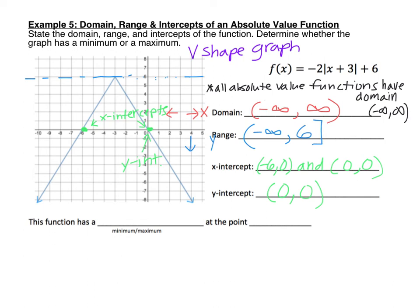As far as whether the function has a maximum or minimum — a maximum is if it has a high point and a minimum is if it has a low point. This graph has a high point; the top of the graph is the highest point it will ever reach. We call that a maximum. Then we name the ordered pair where that maximum is located. The x-coordinate of that point is negative 3 and the y-coordinate is positive 6. So the function has a maximum at the point (negative 3, 6).